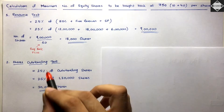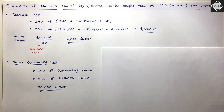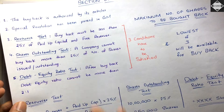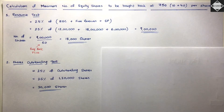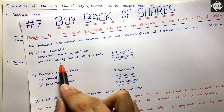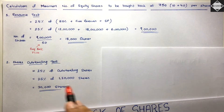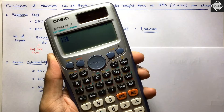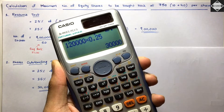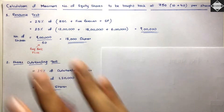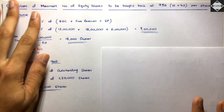The Shares Outstanding Test is simple - take 25% of outstanding shares. A company cannot buy back more than 25% of shares issued or outstanding. Everest Company has 1,20,000 equity shares, so 1,20,000 × 25% = 30,000 shares maximum according to this test.